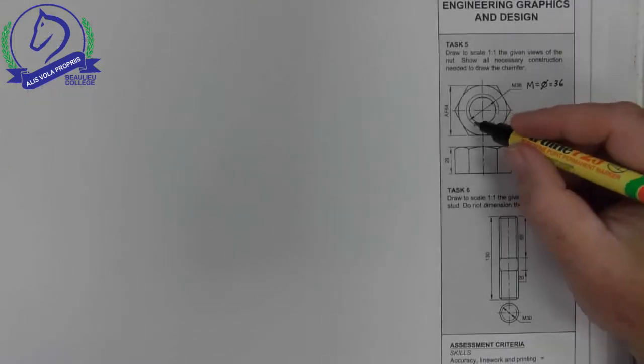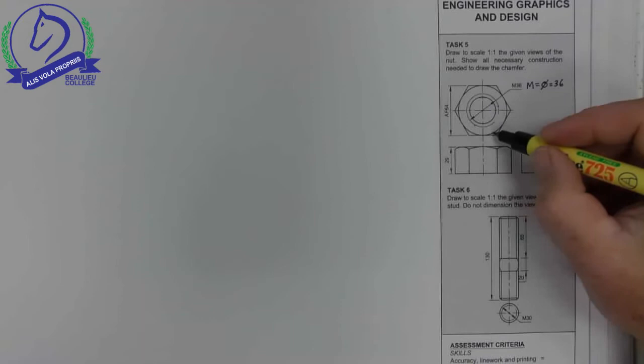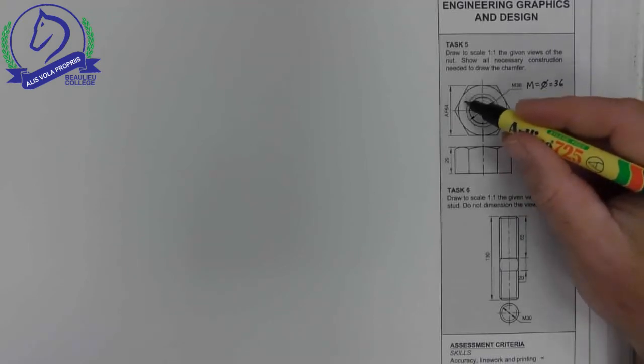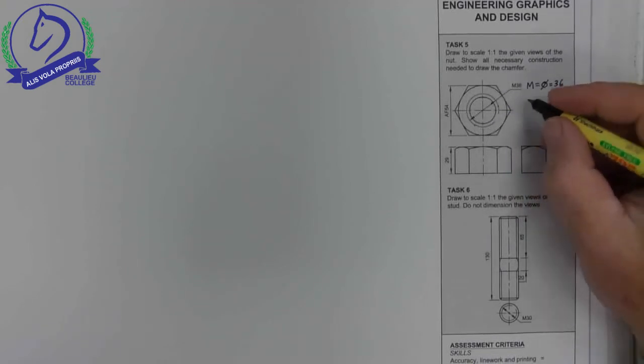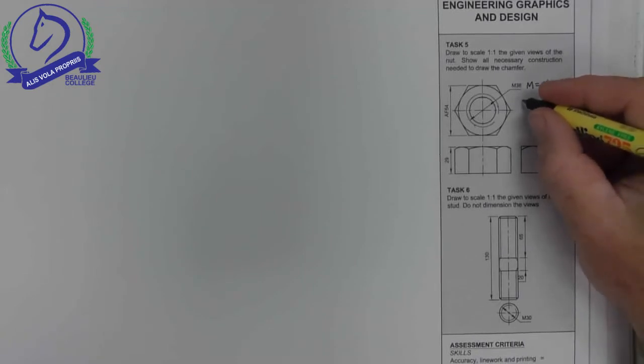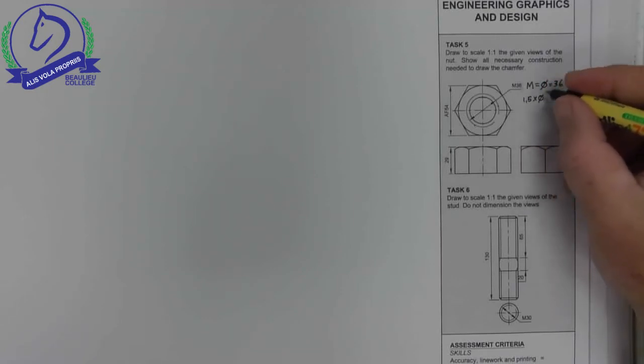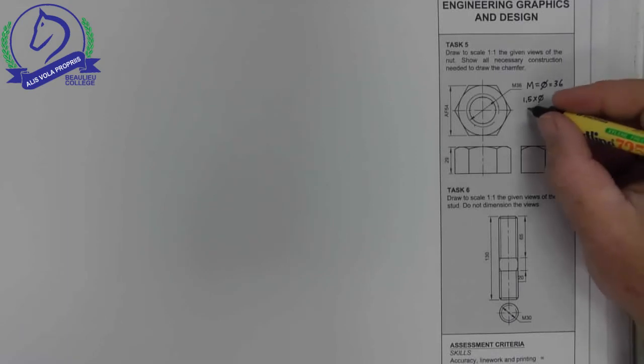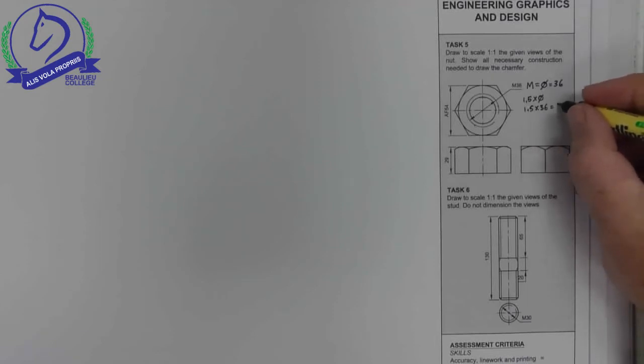In order to construct this, what we do is we draw a circle. Now to get the size of that circle, there is a formula that we have to use and it is 1.5 times the diameter, which in this case is 36.